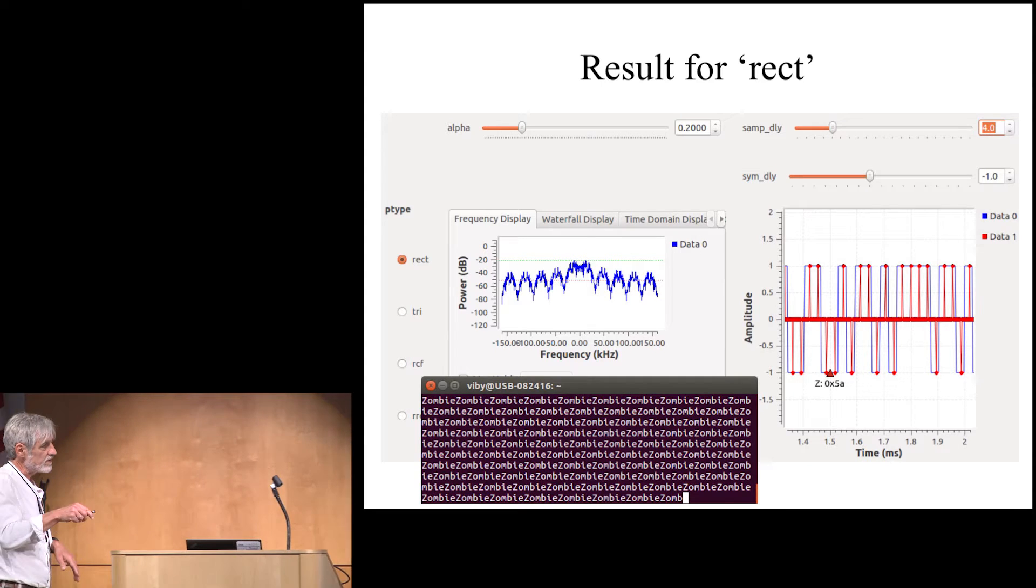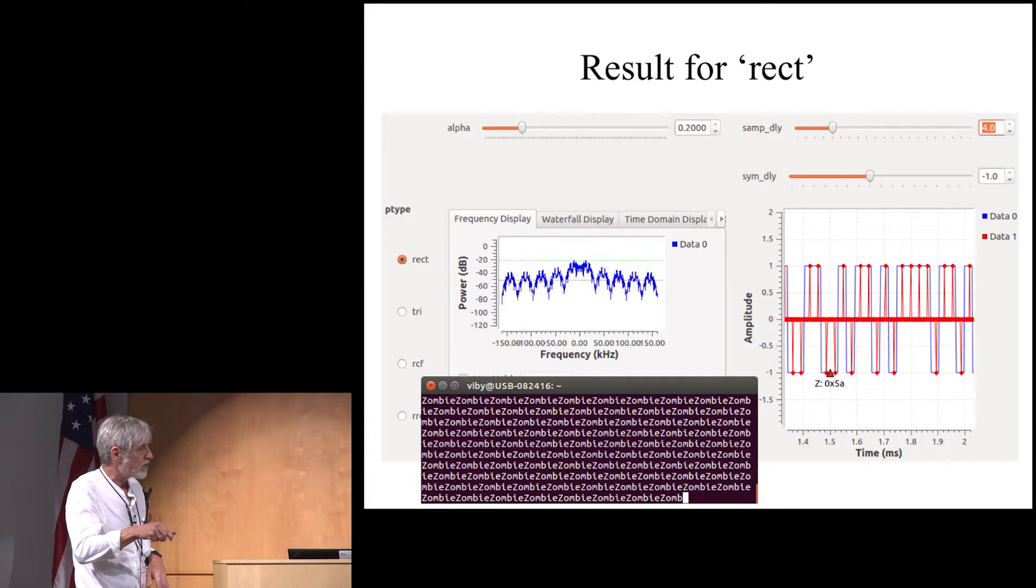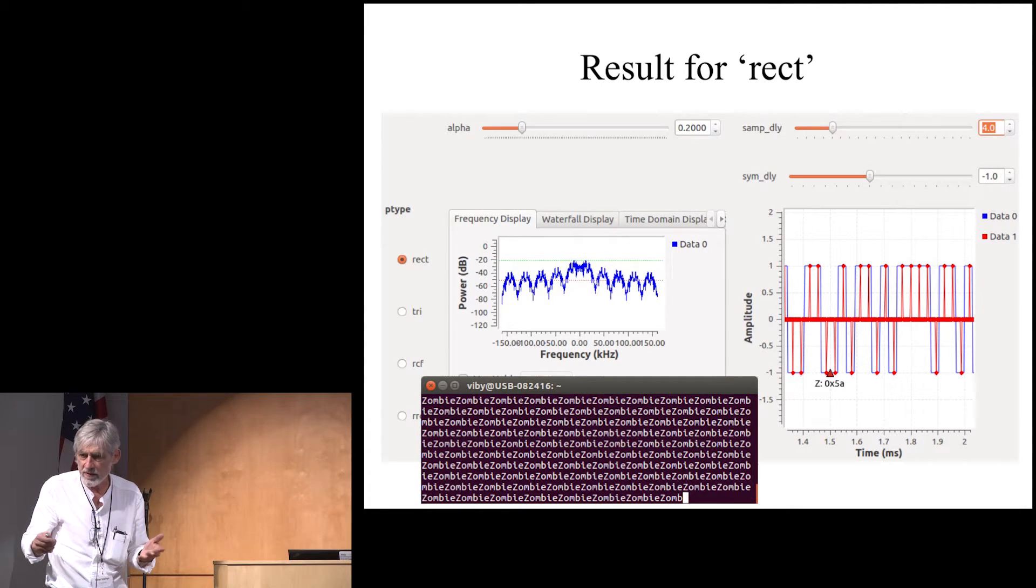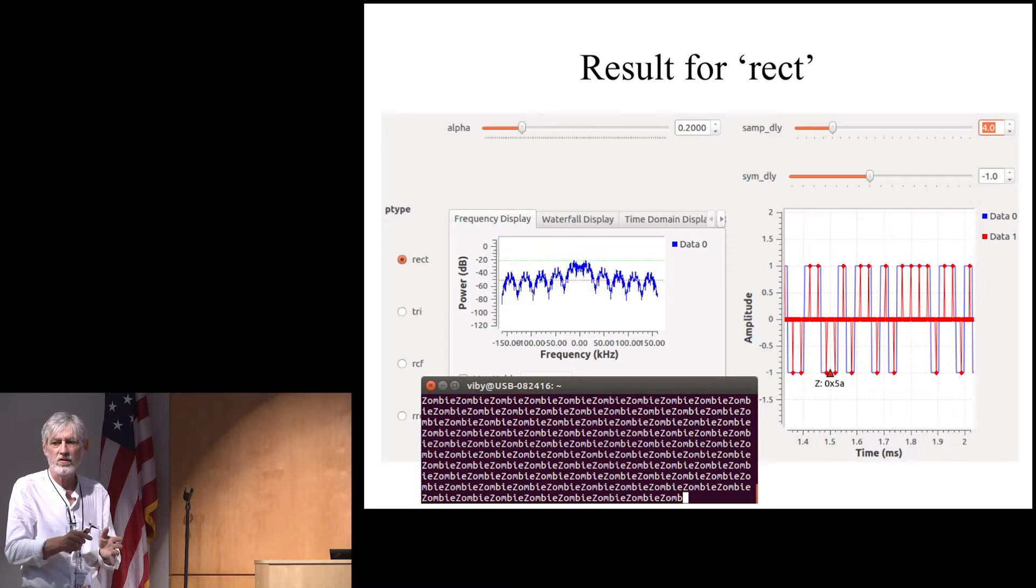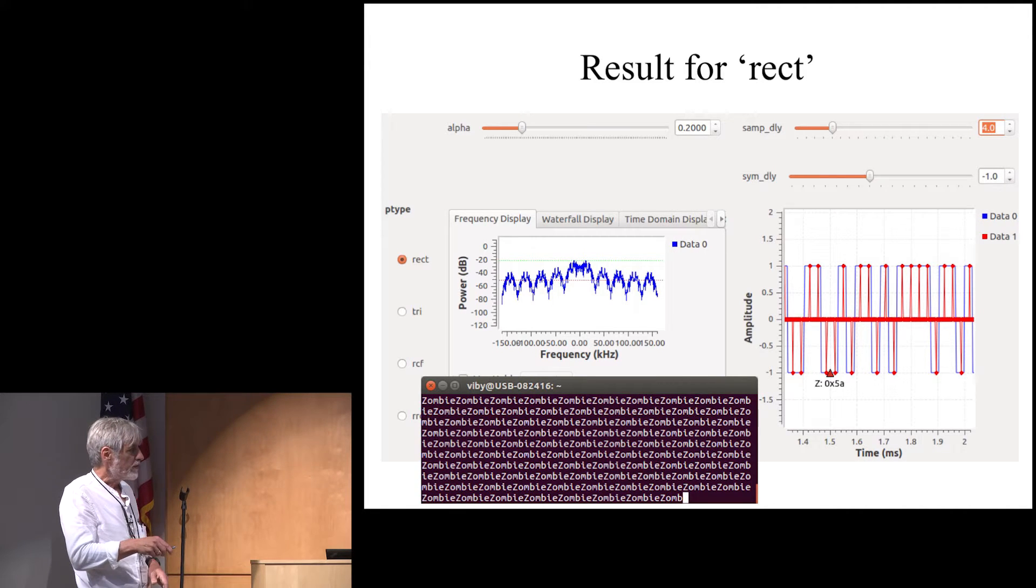And the simplest thing is to just take one sample per symbol and just look at that. And that works fine as long as you don't have noise. So here is what that looks like for a rectangular pulse. The rectangular pulse is the simplest intuitively to use. So we just simply extend. If we have a one, we just extend that for the duration of a symbol.